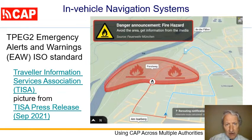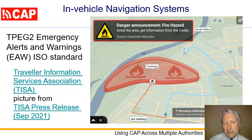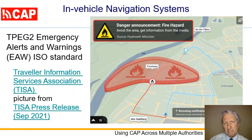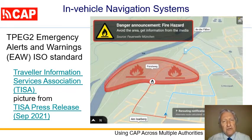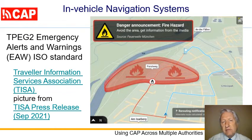CAP alerts are now sent directly to in-vehicle navigation systems — Garmin, TomTom, leading car manufacturers worldwide. These alerts enable drivers to avoid danger areas. It's a mature technology embedded in millions of devices.